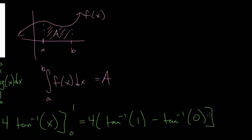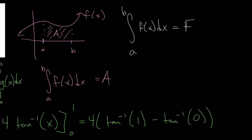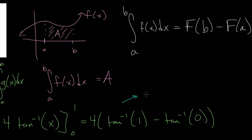Using the Fundamental Theorem of Calculus, we subtract the inverse tangent of 0. The Fundamental Theorem states that the integral from a to b of f of x dx equals the antiderivative evaluated at the top bound minus the antiderivative evaluated at the lower bound. Applying that here: 4 multiplied by the inverse tangent of 1, which is pi over 4, or 45 degrees. The inverse tangent of 0 is simply 0. So 4 divided by 4 is just 1, giving us 1 times pi minus 0. This integral evaluates to pi.